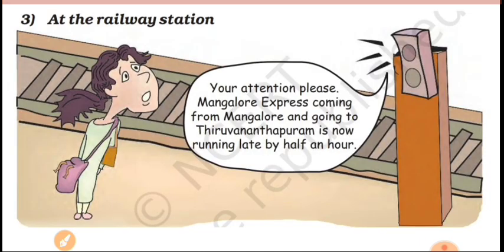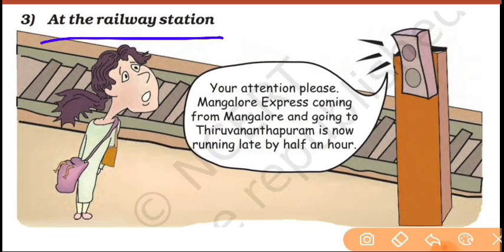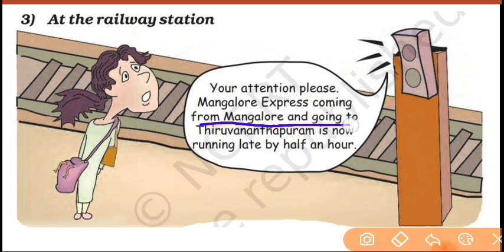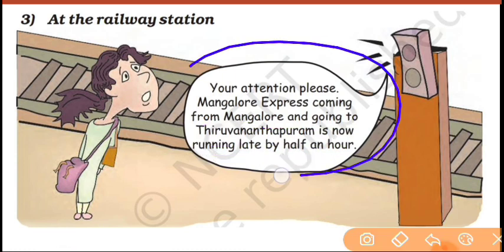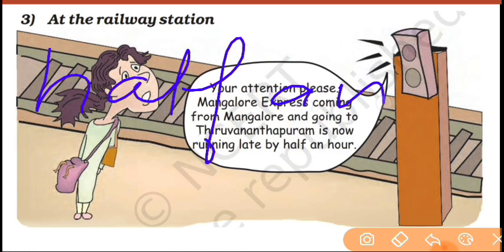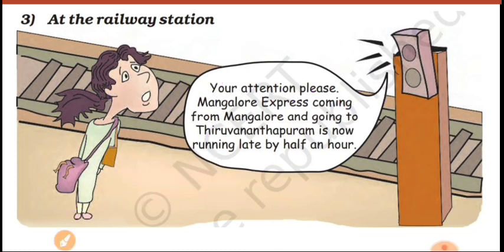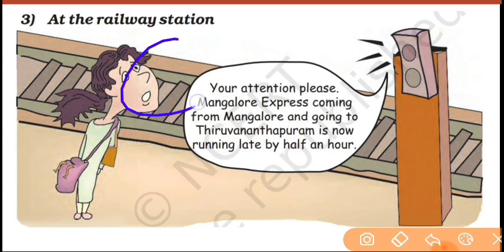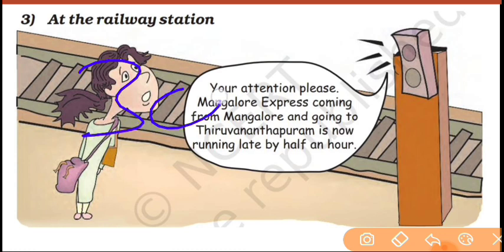Next question — at the railway station. An announcement: Mangalore Express, coming from Mangalore and going to Thiruvananthapuram, is now running late by half an hour. The train is running half an hour late.